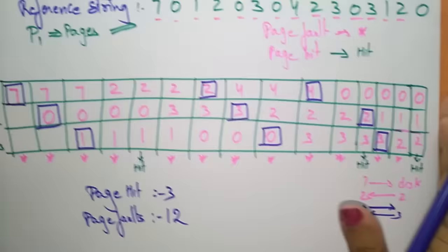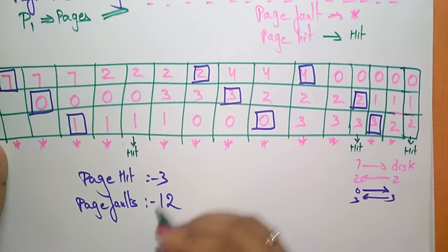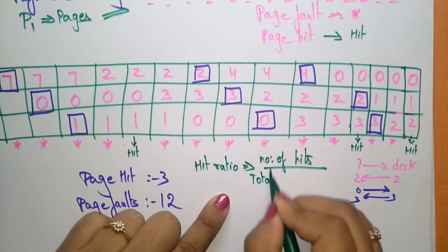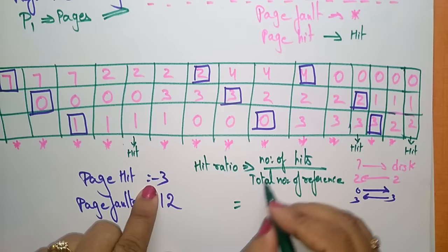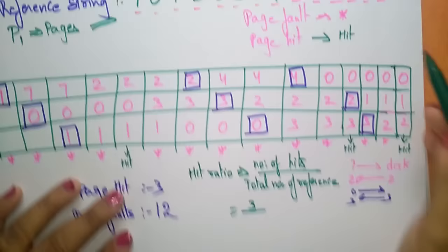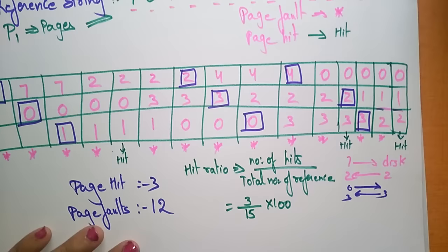The hit ratio can be calculated as: number of hits divided by total number of references, multiplied by 100. The number of hits is 3, and the total number of references is 15. So the hit ratio is 3/15 × 100, which gives approximately 20 percent.